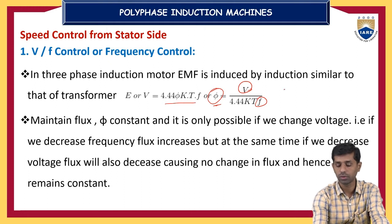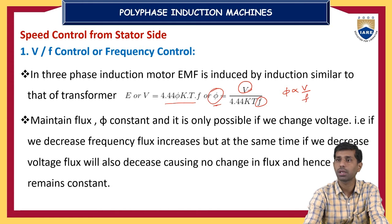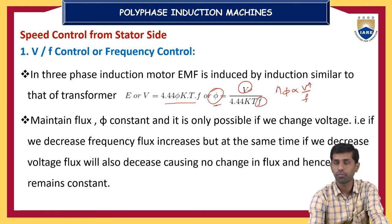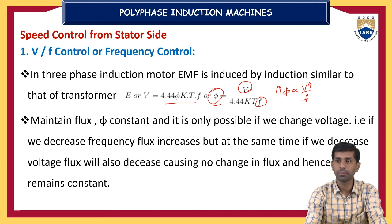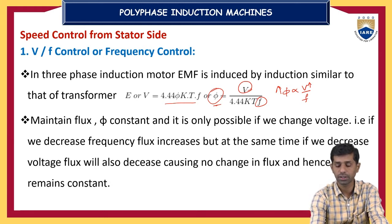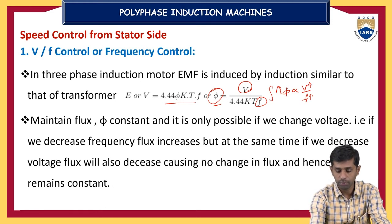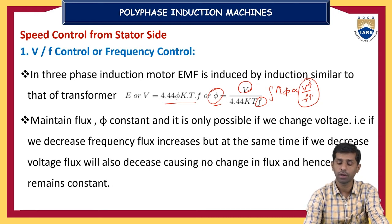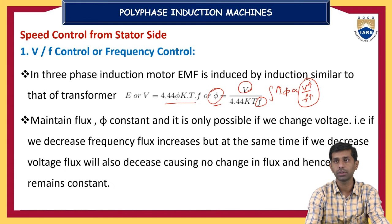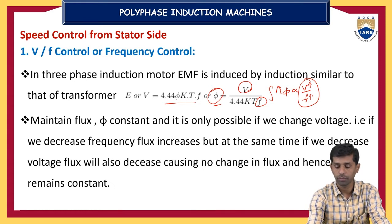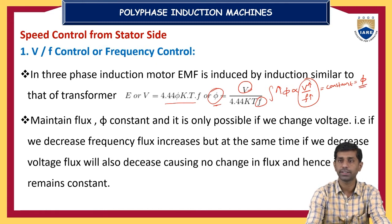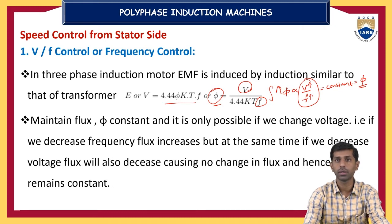Flux is directly proportional to supply voltage and inversely proportional to supply frequency. If you change only the voltage, flux increases, causing magnetic saturation in the stator and rotor circuits. If you increase only the frequency, flux reduces. So by maintaining the V/f ratio constant — decreasing voltage when decreasing frequency and increasing voltage when increasing frequency — the flux of the induction motor remains constant, giving good speed control results from the stator side.